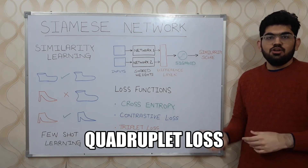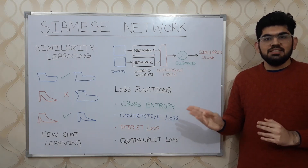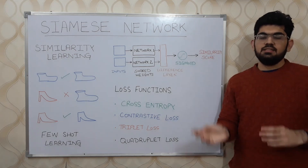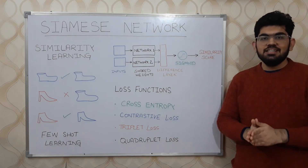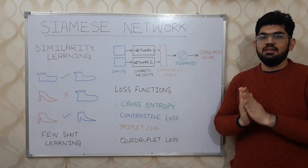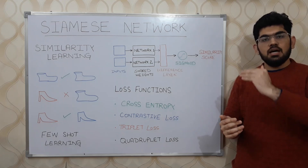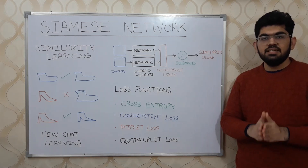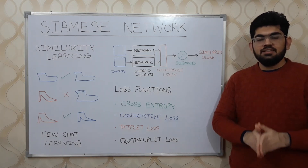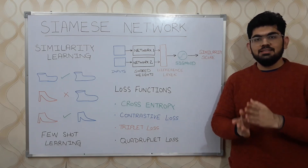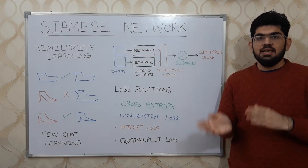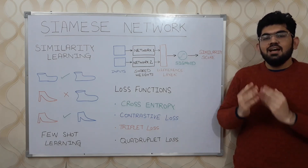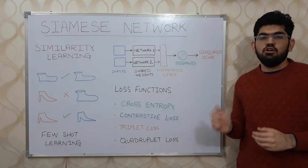In the quadruplet loss function, we provide four input images to the network. Similar to the triplet loss, we provide the anchor image, the positive image, and the negative image. In addition, we also provide an image that is dissimilar to all the above three images. The quadruplet loss similarly encourages the network to maximize the difference between dissimilar images and reduce the distance between similar images. The main low-level details are in the mathematical function of this particular loss.